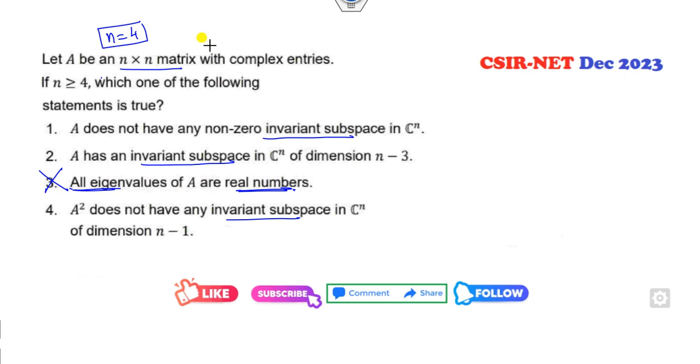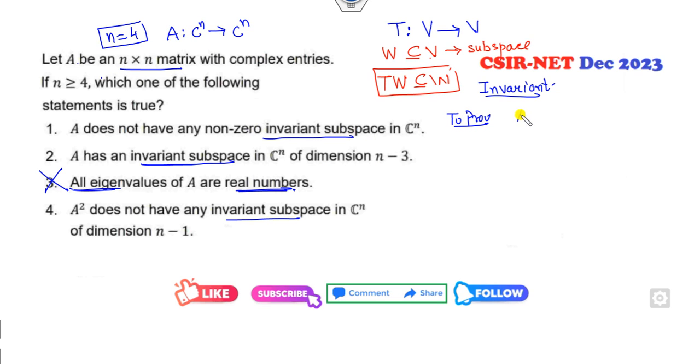Now the rest of the options are about invariant subspaces. What is invariant means? If you have the mapping T from the vector space V to V, then W is the subspace of V. We call this my invariant if you prove that T(W) is the subset of W. Now if you look at that, A is n × n. That means C^n to C^n. So T is basically my A. So your target is to prove A(W) is the subset of W. If you prove this, then you can say W is my invariant subspace of C^n.